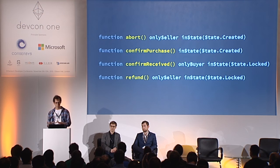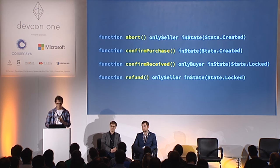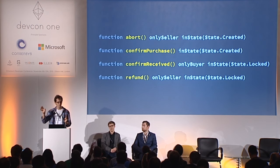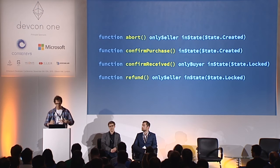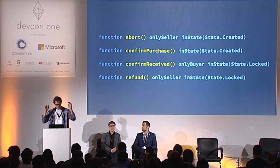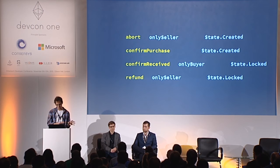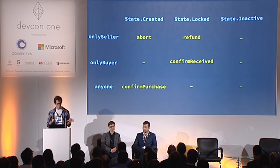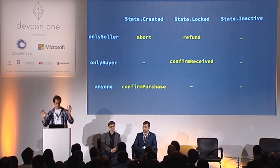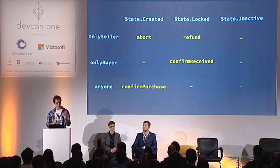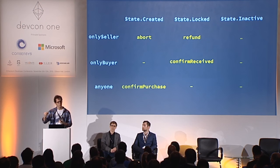Now let's take another look at the contract — all the functions the interface has to support: abort, confirm purchase, confirm received. You'd think we need four buttons plus an address input field. But before jumping into Photoshop, let's try to simplify. If you remove the code and look at the functions and their modifiers, you can rearrange them and notice there are basically three states and two conditions.